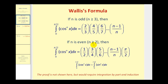If n is even and greater than or equal to two, then this definite integral is equal to one-half times three-fourths, and so on, times pi over two. If n is even, notice that the numerator is a sequence of odd whole numbers all the way out to n minus one, and the denominator is a sequence of even whole numbers all the way out to n. Then we multiply this product by pi over two.